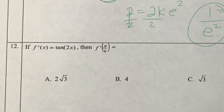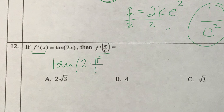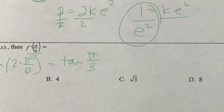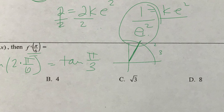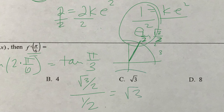The derivative is already given as tan(2x). We just evaluate at x equals pi over 6: tan(2 times pi over 6) equals tan(pi over 3). Pi over 3 is the 60-degree angle. Tangent is the ratio of y over x on the unit circle, which is (root 3 over 2) divided by (1 half) — that reduces to root 3.